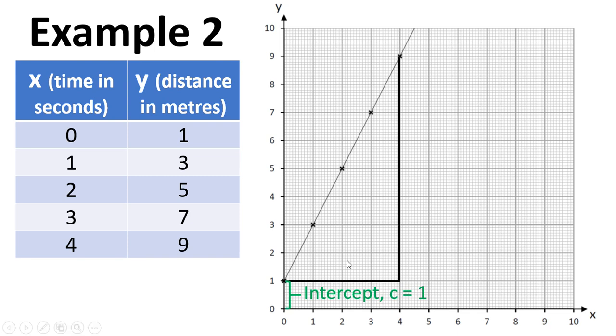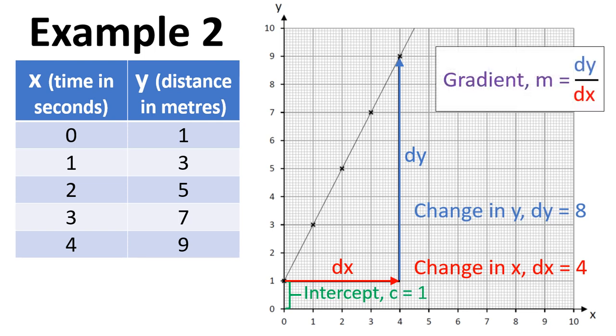So first of all, we can see that the intercept equals one. And then if we draw a triangle onto this graph, then we can work out the gradient. So the first thing is to work out DX, the change in X. As we move from our start point on the triangle, we move across four. And then as we move up, we've got DY, the change in Y, and that is eight. And the gradient is given by DY by DX, so change in Y divided by change in X. So in this case, it's eight divided by four equals two. The intercept is one. So our overall equation for this line is Y equals two X plus one.